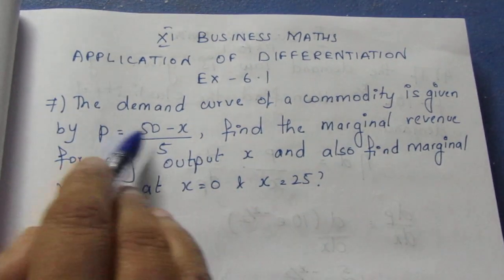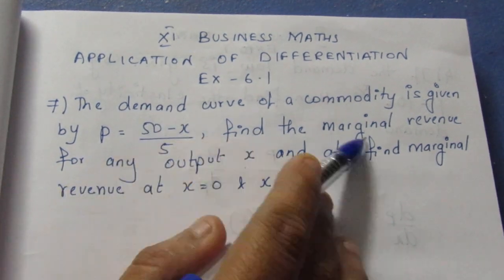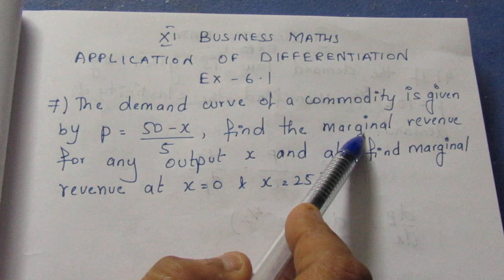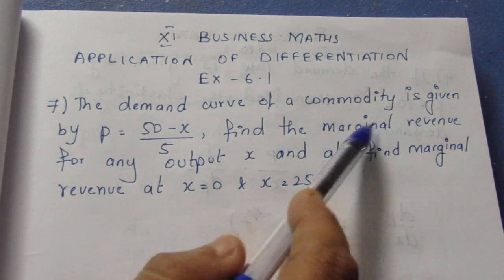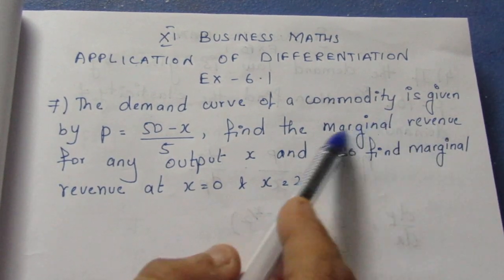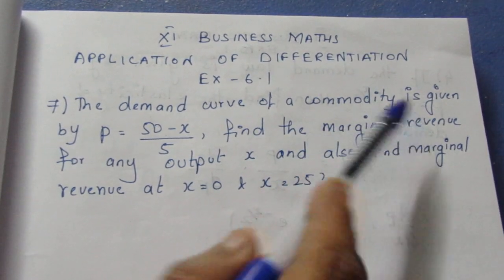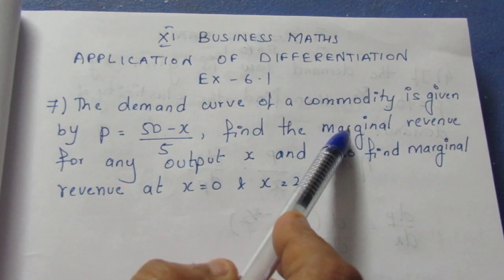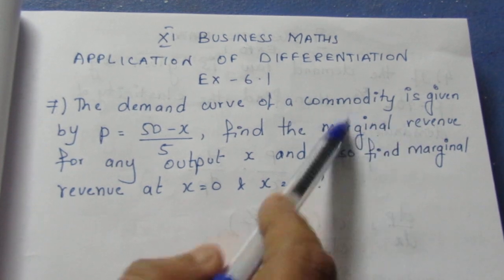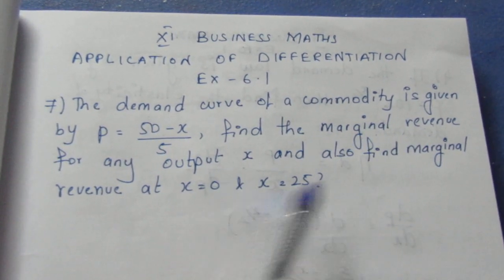Now, P is equal to demand. To find marginal revenue, we first find revenue. We know that marginal revenue is the differentiation of revenue. So when we find revenue, we can then find marginal revenue. That will substitute the x value.